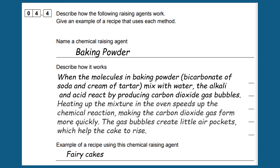Here is an example of an exam question regarding chemical raising agents. A chemical raising agent is baking powder. When the molecules in baking powder — bicarbonate of soda and cream of tartar — mix with water, the alkali and acid react, producing carbon dioxide gas bubbles. Heating the mixture in the oven speeds up the reaction, making carbon dioxide gas form more quickly. The gas bubbles create little air pockets which help the cake to rise. An example of a recipe using this chemical agent could be fairy cakes.